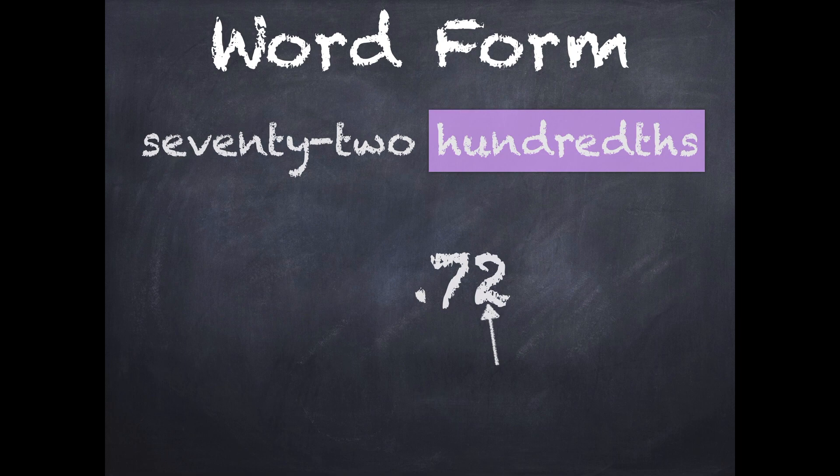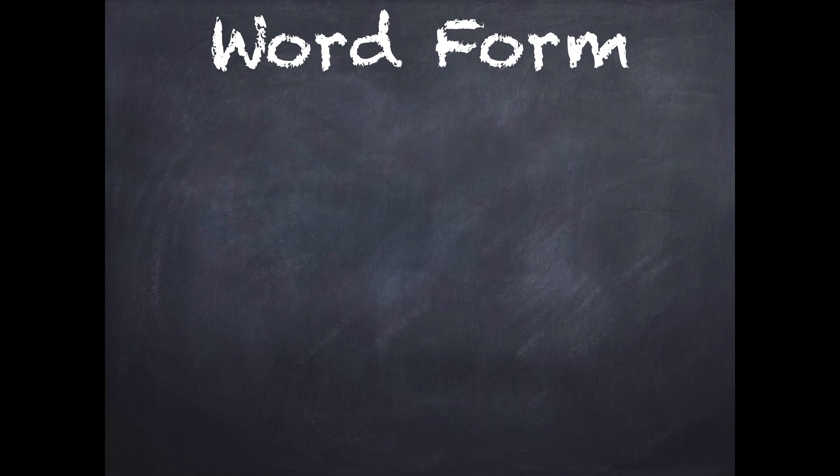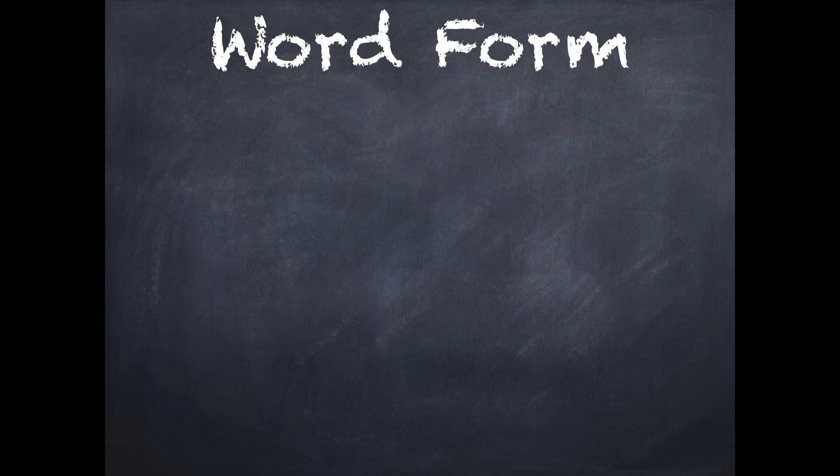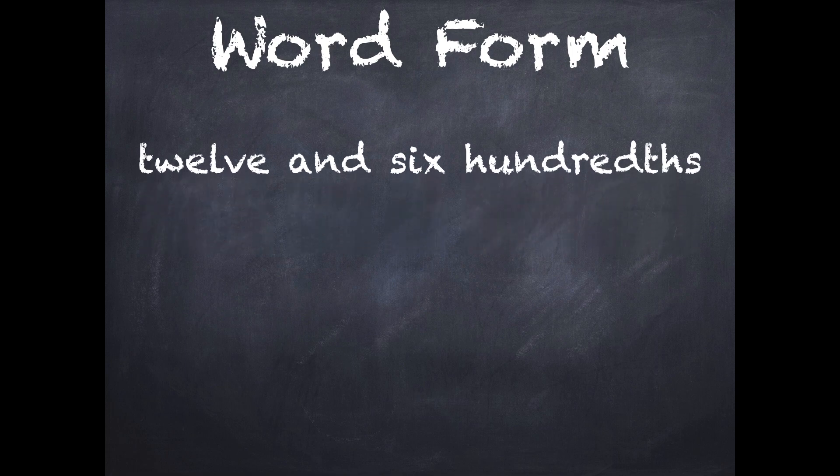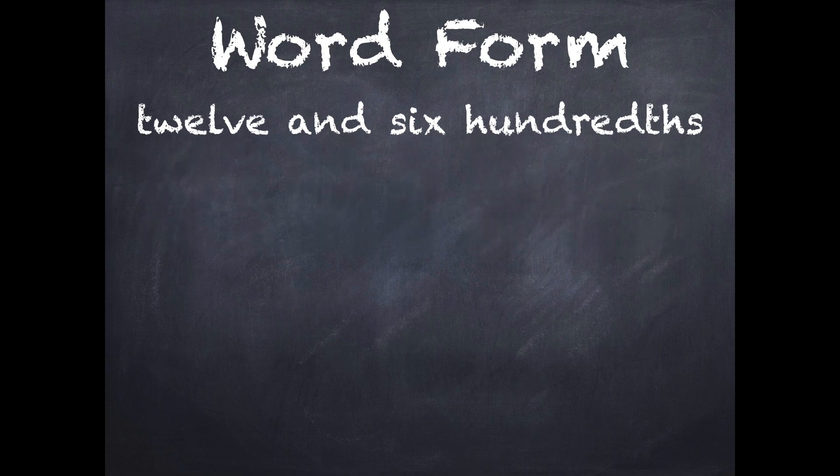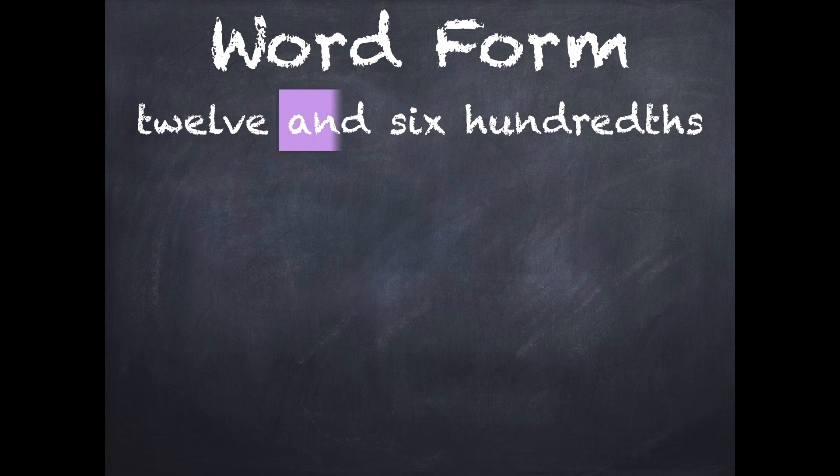How about another decimal? This one says twelve and six hundredths. So this one is going to be a mixed number. I know that because there's two clues. One clue is the 'and.' That tells me it's going to be whole number and decimal. So I'm going to start with the whole number side.